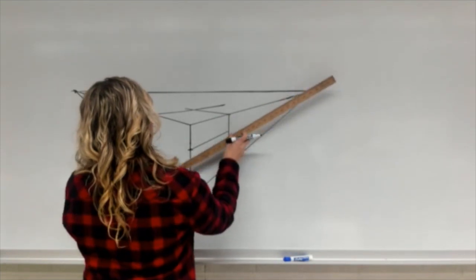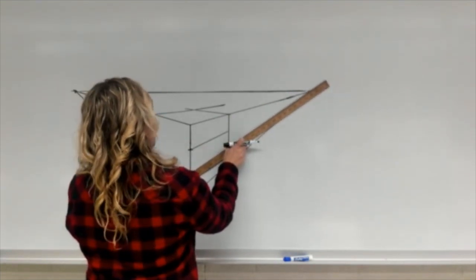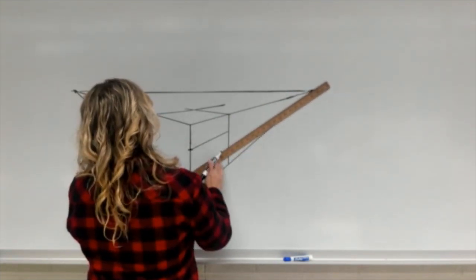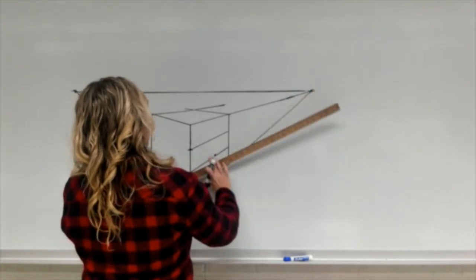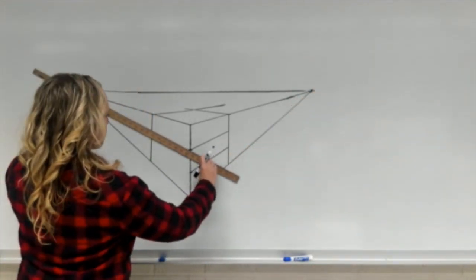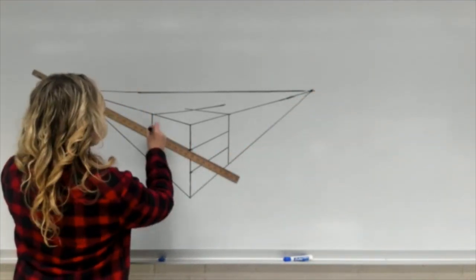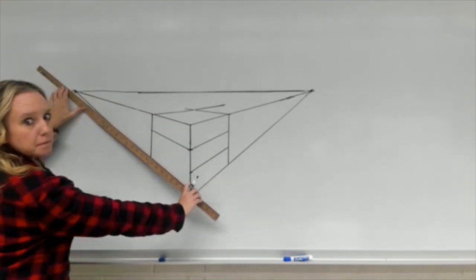Then from those points you connect that up to the vanishing point right on this side, and you'll do vanishing point left on the other side. So those become three equal divisions.